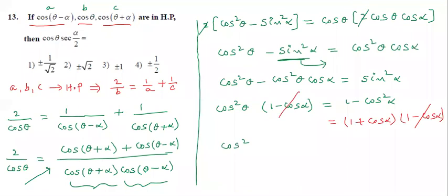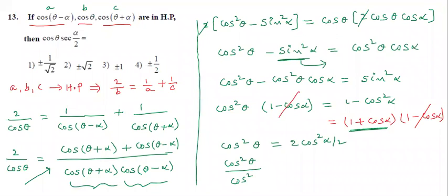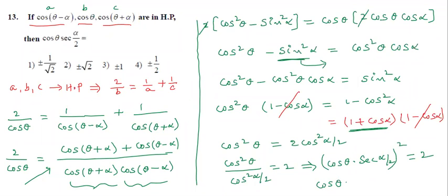Remaining: cos²θ = 1 + cos α. Using the formula 1 + cos α = 2 cos²(α/2), we get cos²θ = 2 cos²(α/2). Sending cos²(α/2) to the left side gives cos²θ / cos²(α/2) = 2, so cos θ · sec(α/2) = ±√2. This is the answer.